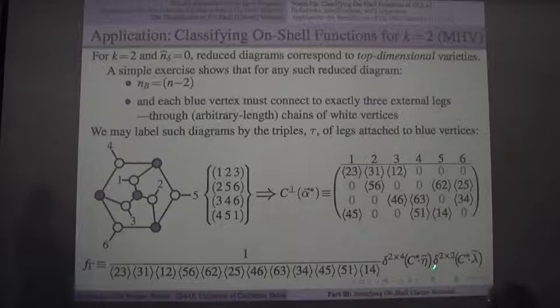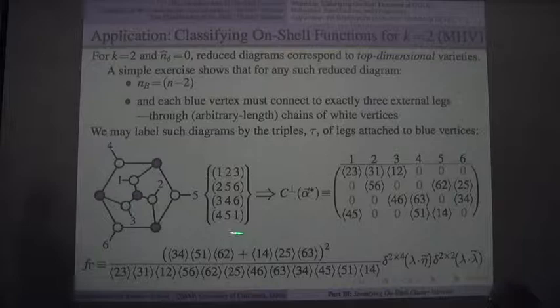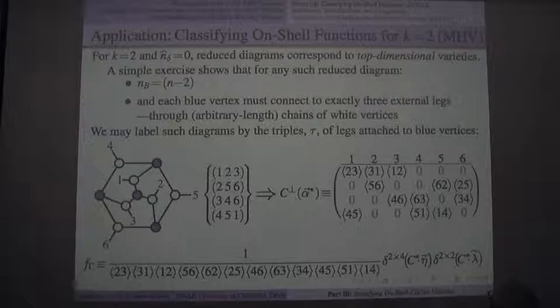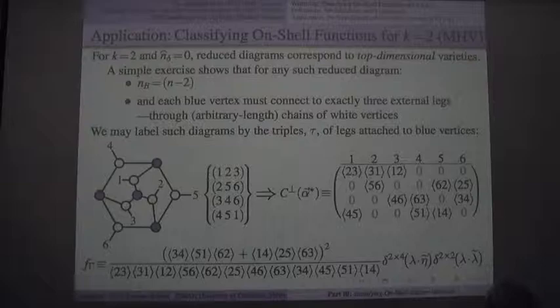There's one subtlety: the gauge-invariant content of lambda is a Grassmannian, but the function needs to be covariant. C and lambda being the same up to GL2 is not quite enough because they differ by a GL2 transformation. Changing from C-star (equal to lambda) up to a GL2 costs a Jacobian — it's the (N−2)×(N−2) determinant of C-perp with any two columns deleted, squared.